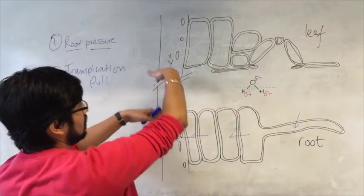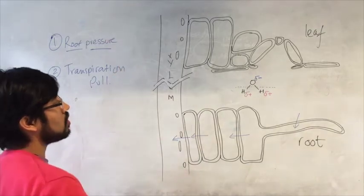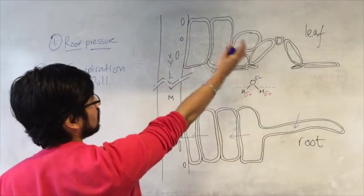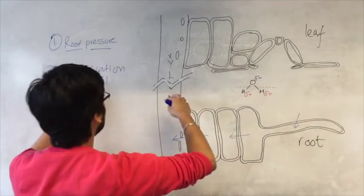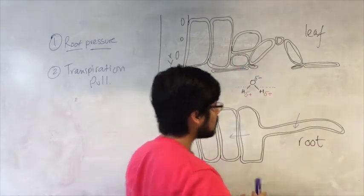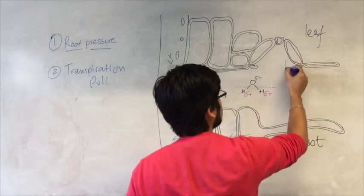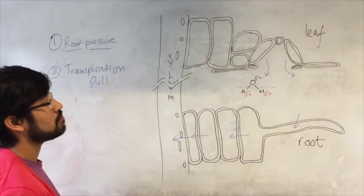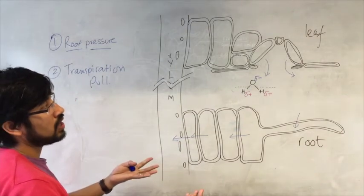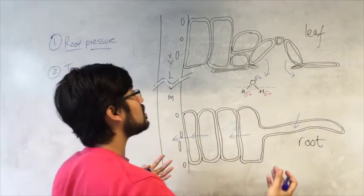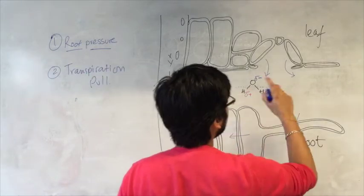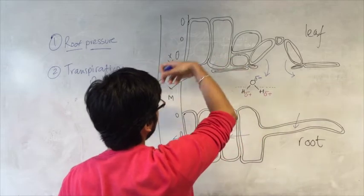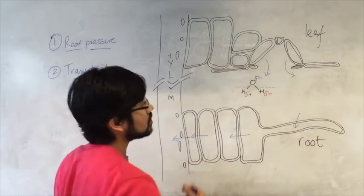Just imagine the stem is much longer, and we have the root — water has to move up the stem and into the leaf. Why would it do that? Transpiration pull. We have water being lost from the stomata of the leaf, and in other places, and what this does is create a kind of pull that pulls more water up.